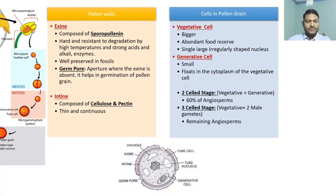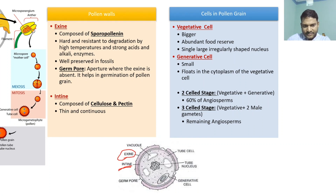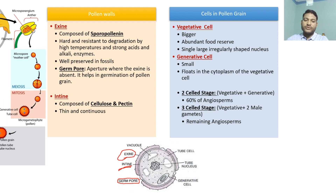The pollen wall has two layers. You are going to have the exine, which is the outermost layer, and then the intine, which is the inner layer. At certain positions known as the germ pore, you are not going to see any exine. So at the germ pore, only intine is present. This is very important — the germ pore does not contain exine.